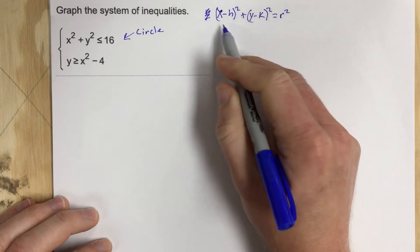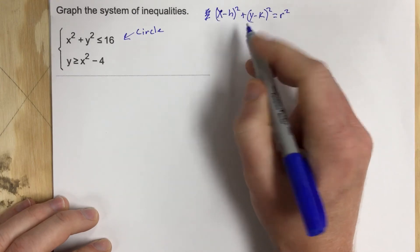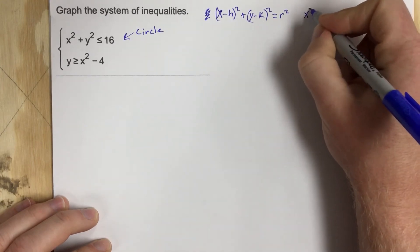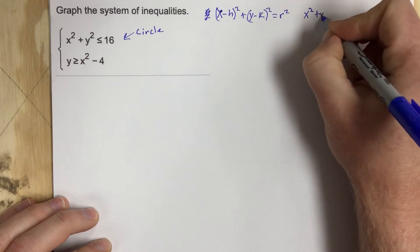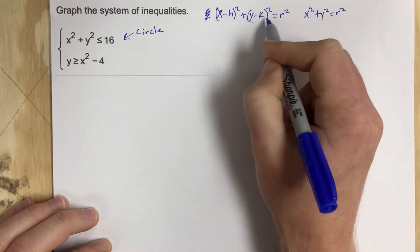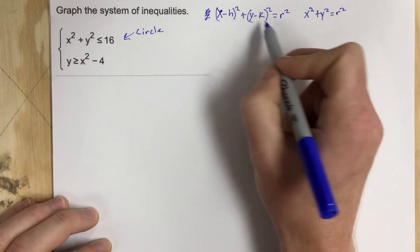Now this is not the general form. The general form of the equation is x squared plus y squared equals r squared. But this is when you have a shift for the center.